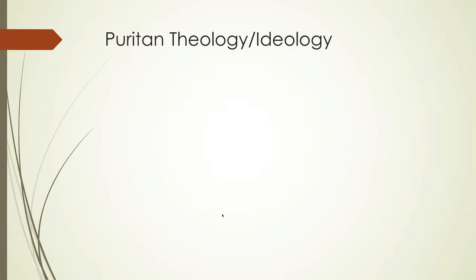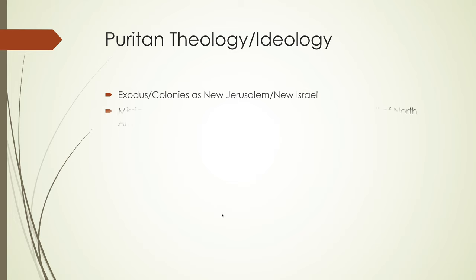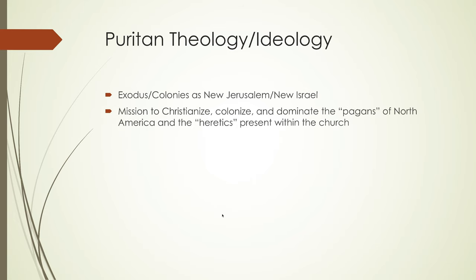The Puritans viewed themselves as members of Calvin's elect — those chosen by God for salvation — and they took this quite literally. Breaking communion with the Anglican Church and establishing congregational models, they viewed themselves very much as the Jews fleeing Egypt in the book of Exodus. This established the English colonies as a sort of new Jerusalem, or a new Israel in their minds. This also allowed the Puritans to view themselves as being on a mission to Christianize, colonize, and dominate the pagans of North America, and purge the heretics from the church.